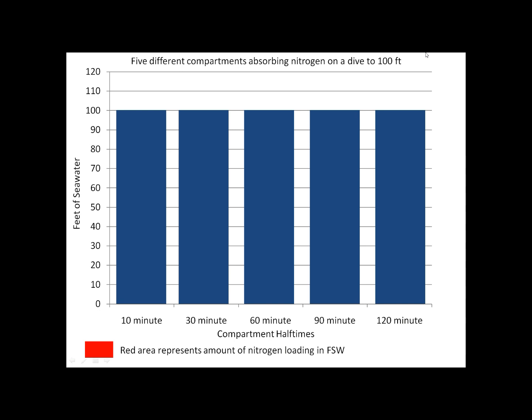Now let's ramp it up and look at five different compartments absorbing nitrogen on a dive to 100 feet. I've chosen to use a five-compartment model with half times of 10, 30, 60, 90, and 120 minutes. It's important to realise that this model is completely made up — it would not work to actually plan any dives; the numbers were chosen to make it easier to see what's happening. After 30 minutes, the 30-minute compartment has done one half time and is at 50 feet of seawater nitrogen loading, halfway between starting pressure and dive depth.